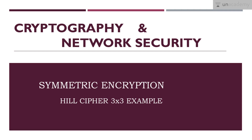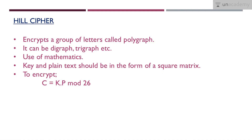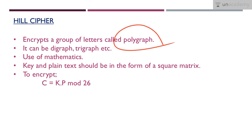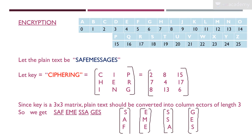In previous lessons we learned the encryption and decryption process with two by two matrices. Now let's try another example with three by three matrices. We use the same formula for encryption and decryption for all matrix orders. The encryption formula is: C = K × P mod 26, where C is the cipher, K is the key, and P is the plain text.